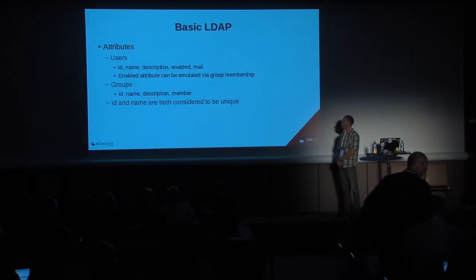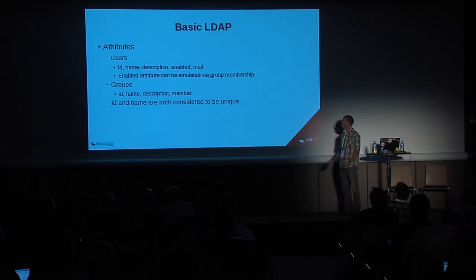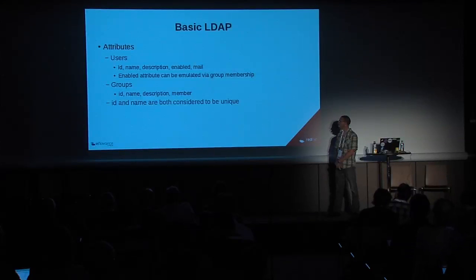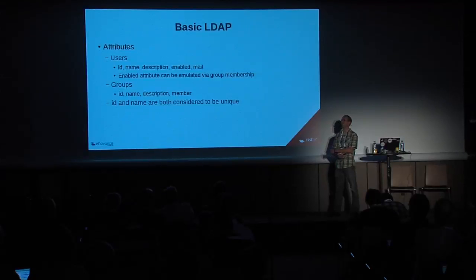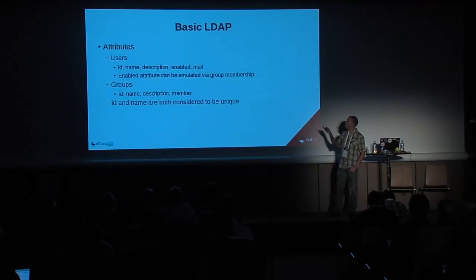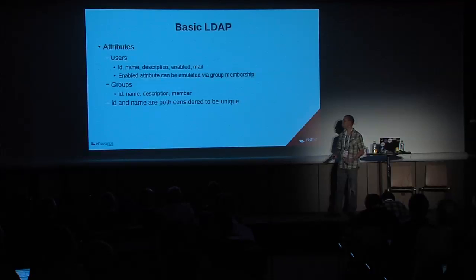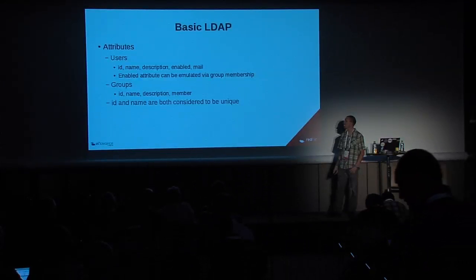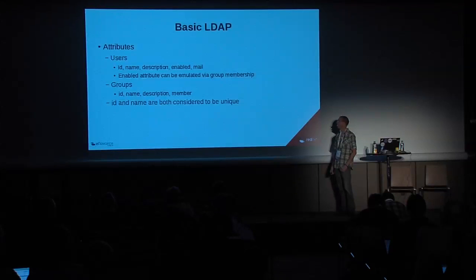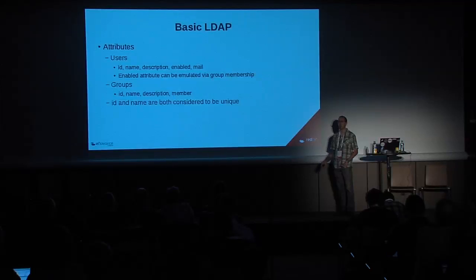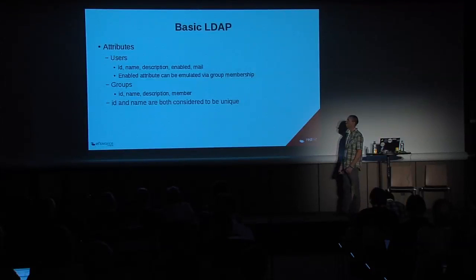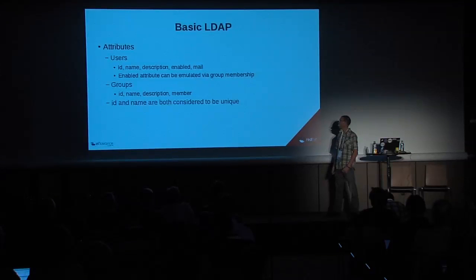On the group side it's even simpler: ID, name, description, and a member attribute. ID and name are both considered unique identifiers in the way Keystone uses them — they can be mapped to the same attribute, which is actually preferable. On the SQL side you'd see ID as a UUID and name as a UID used to log in. For LDAP, you usually don't have a UUID, so you can map them both to UID or SAM account name or something similar.